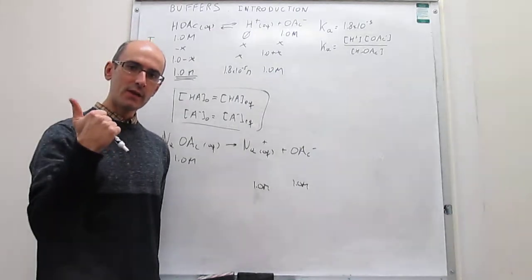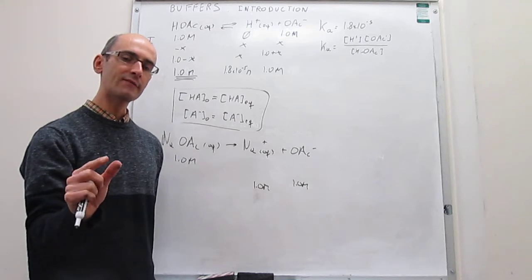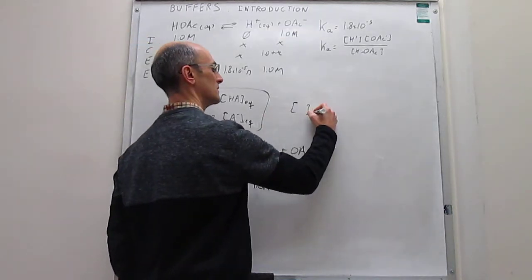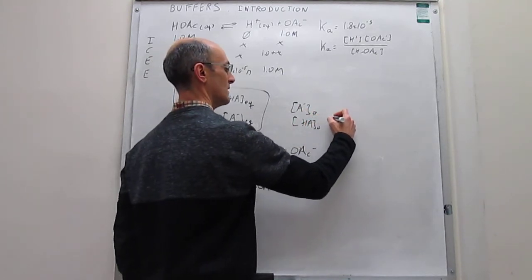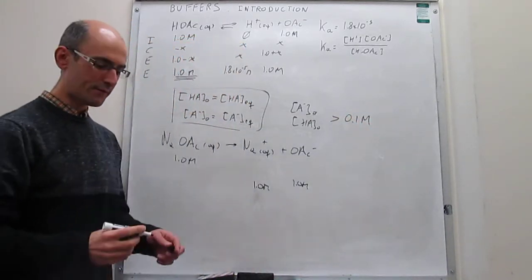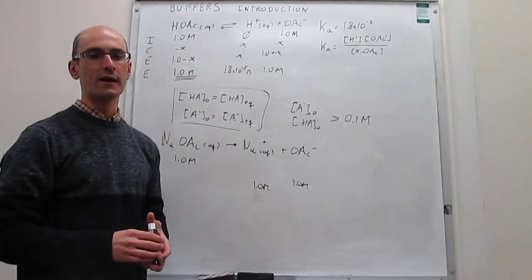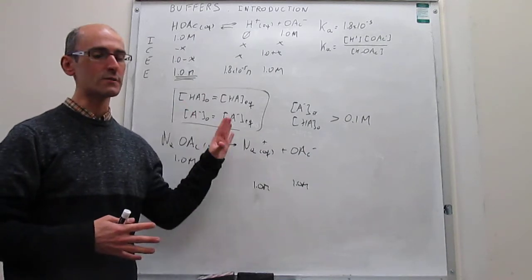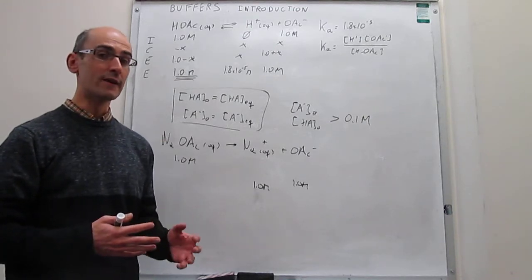The conditions required for a buffer are: a weak acid, a salt of the conjugate base, and both must be in reasonably high initial concentrations — greater than approximately 0.1 molar. When you have these requirements, you get the buffer effect, because these solutions tend to resist the addition of small amounts of acid and small amounts of base very well.